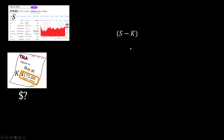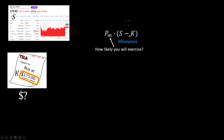Say the contract price is K, and the stock price is S. Then the difference of the two definitely plays a role — let's call it moneyness. But such moneyness only matters if you are going to exercise the option, hence it is weighted by the probability of exercising the contract. That probability depends on whether it is profitable to do so or not. Right now, the profit is $5, but it could get better or worse.